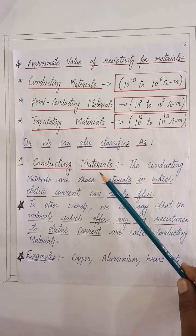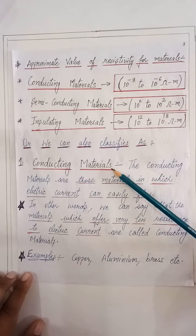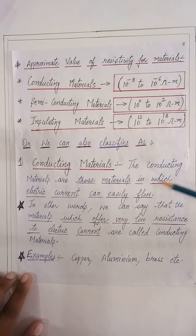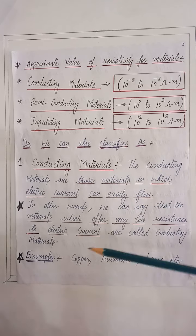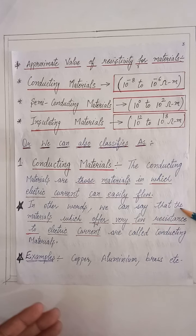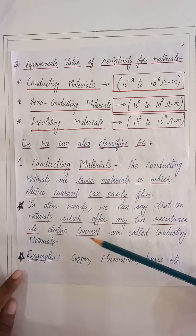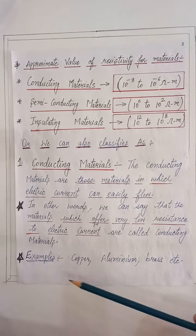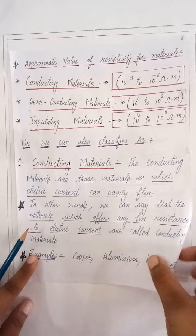We can also classify these materials according to the following types. First is the conducting material. Conducting materials are those materials in which electric current can easily flow. In other words, those materials which offer a very low resistance to the electric current are called conducting materials. For example, copper, aluminum, brass, etc.